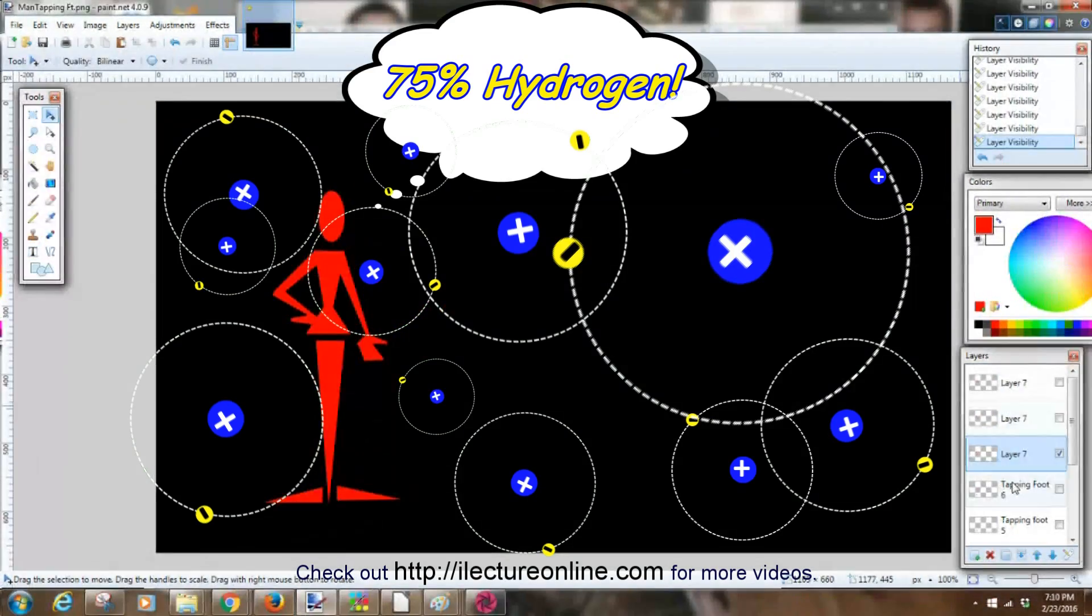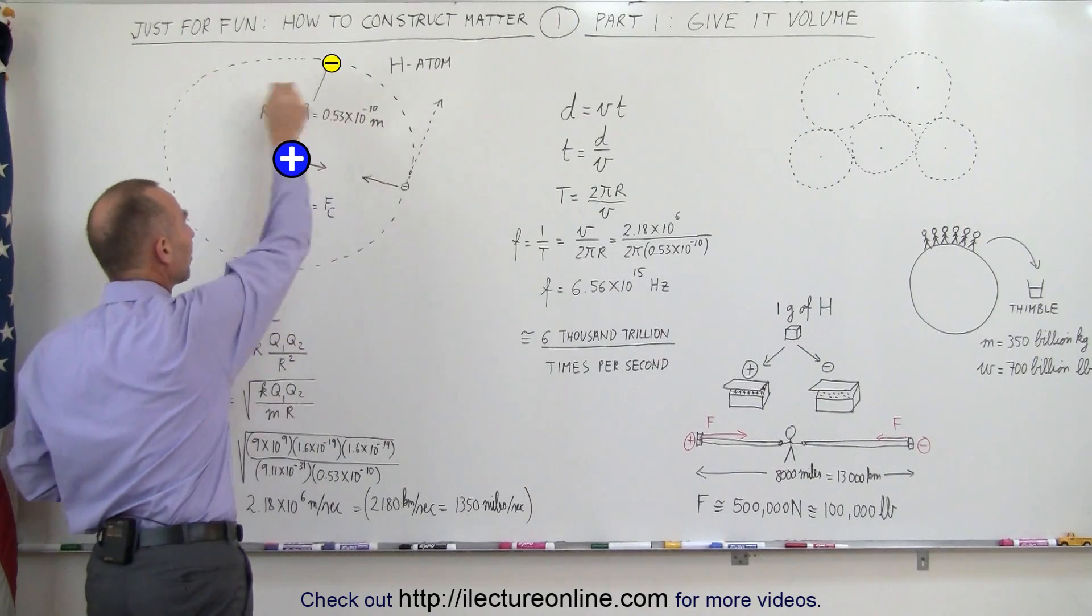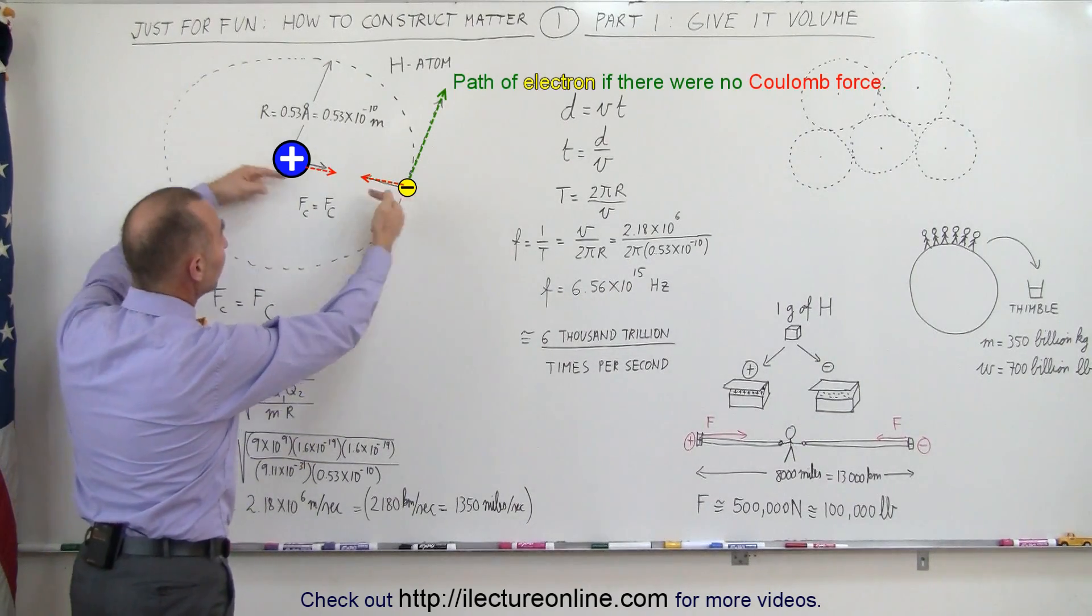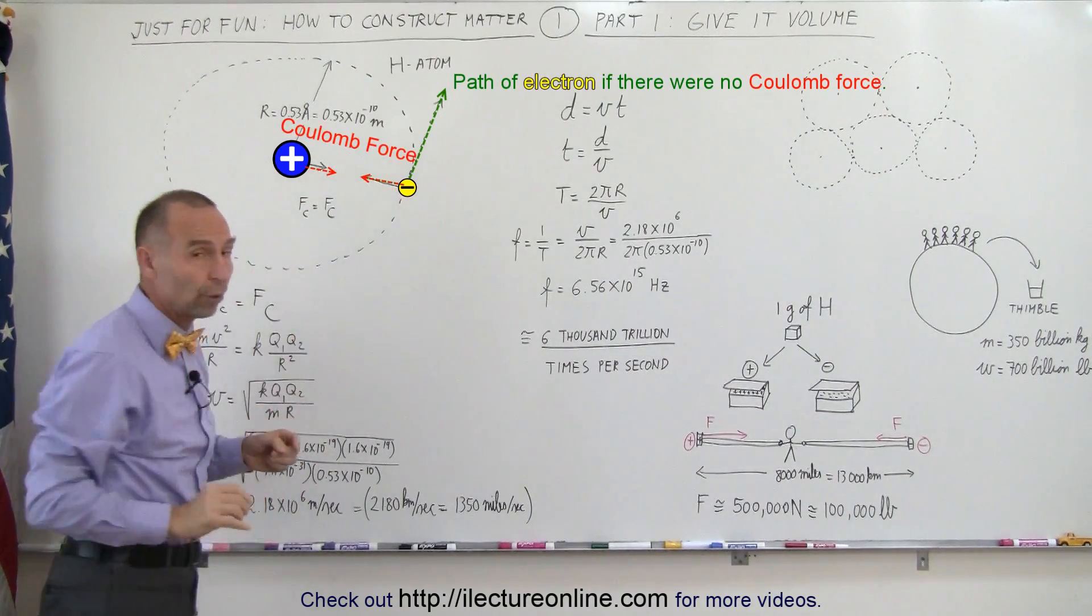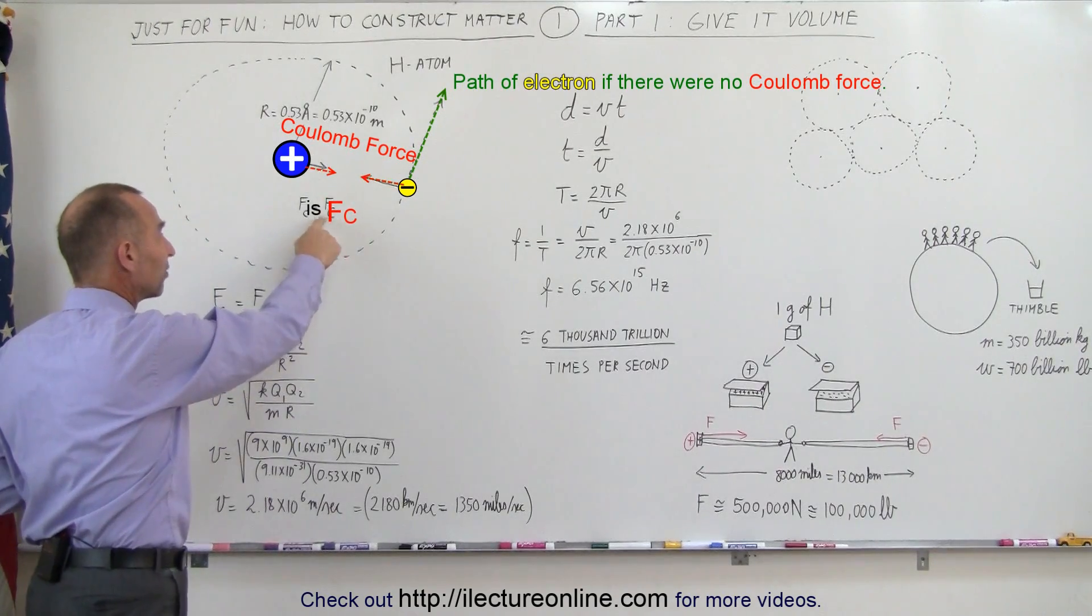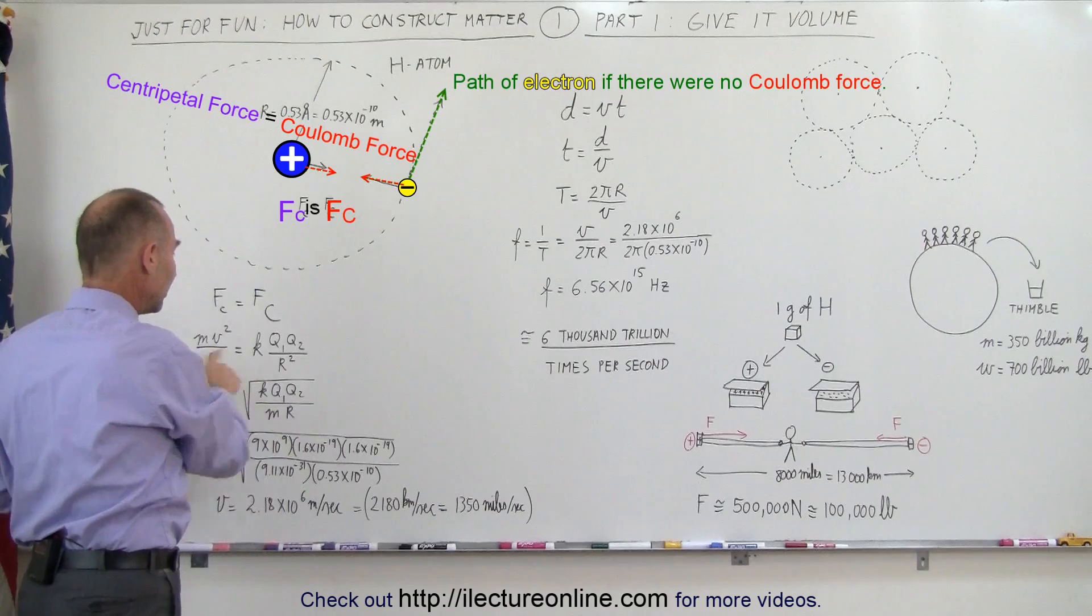Hydrogen is a single proton at the center and electrons zip around the nucleus quite fast. It does that because they attract one another via the Coulomb force, the force between two charges. Since the Coulomb force makes a centripetal force, we can write the equation down.